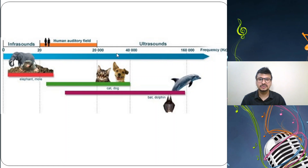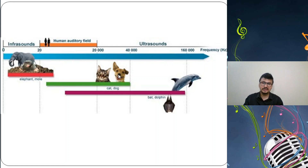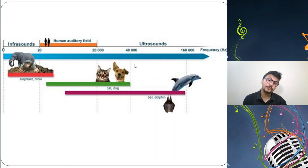Cats and dogs listen to sound from 20,000 to 40,000 hertz. That's why when there is an earthquake or any natural calamity, dogs and rats sense it earlier than humans, because their audio sensation frequency is a little higher — 20,000 to 40,000 hertz — higher than human beings.